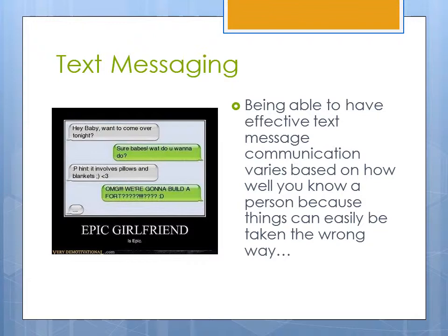Now that we've talked about the public use of pragmatics in digital spaces, let's get more personal and talk about text messaging. Just about everyone has their own mobile phone, but not every individual knows how to communicate effectively through text message. Being able to have effective text message communication varies based on how well you know a person, because things can easily be taken the wrong way based on how you write them. Let's look at an example of what I mean.